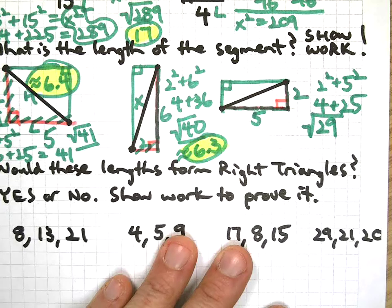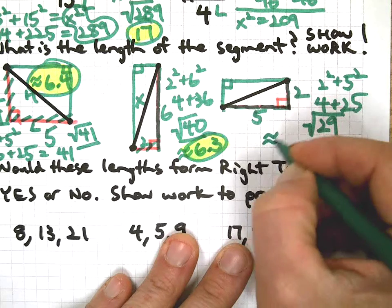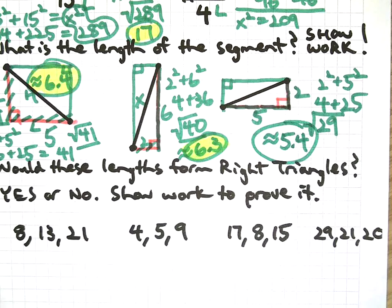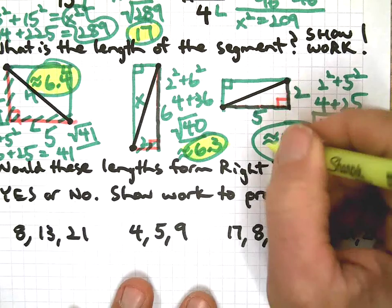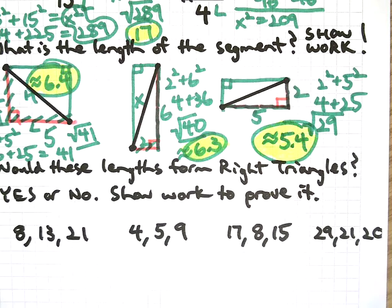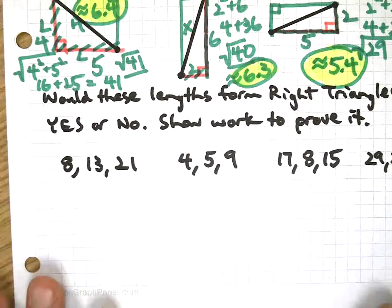29. I need to find the root of 29. I know it's going to be 5 point something. What do you think? 5.3, 5.4? Yeah, somewhere in there. If I round it off, it's about 5 and 4 tenths roughly. Hence the little squiggly lines, right? That means about.